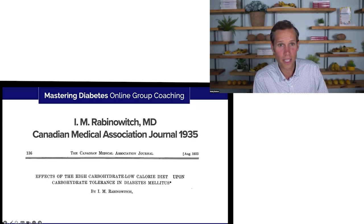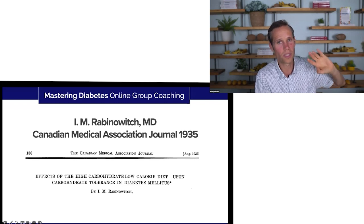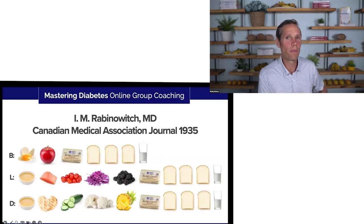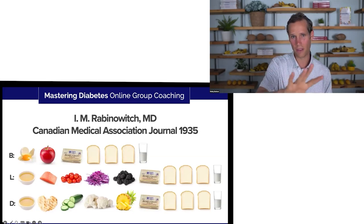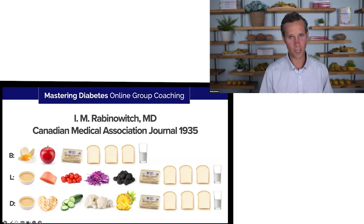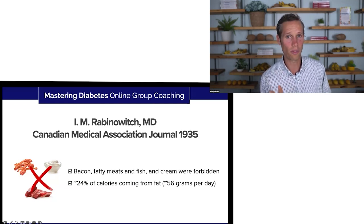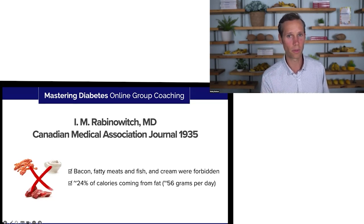In 1935, Dr. Rabinovich published a paper called 'The Effects of the High-Carbohydrate, Low-Calorie Diet Upon Carbohydrate Tolerance in Diabetes.' Though he used the term 'low-calorie' in the title, it was actually isocaloric — he didn't decrease or increase calories, he kept them constant. It wasn't some 600 or 800 calorie diet. He fed people a very consistent diet with a solid, systematic mechanism for teaching how much and what to eat. The key thing is it was a significant increase in carbohydrate compared to the low-carb diet. Bacon, fatty meats, fish, and cream were all forbidden. In this case, 24% of calories came from fat — still not as low as we want, but some remarkable early results.